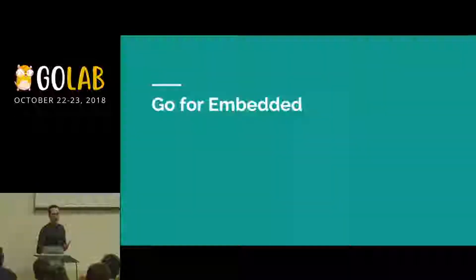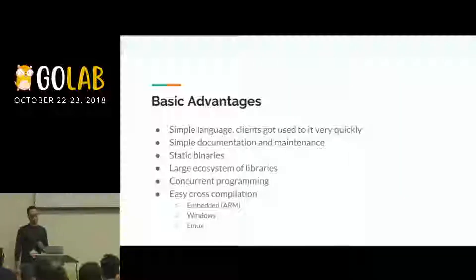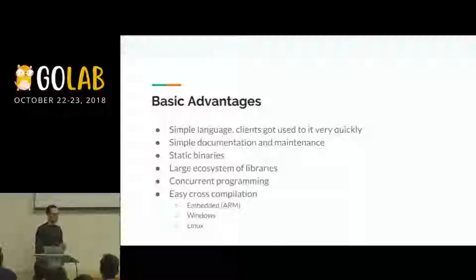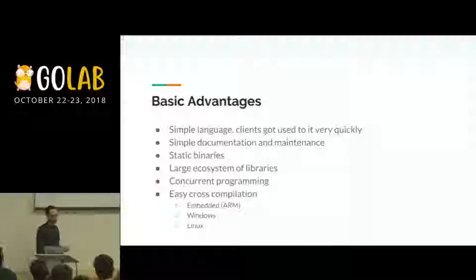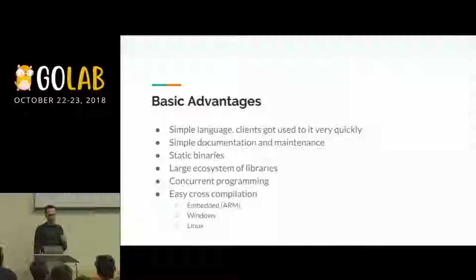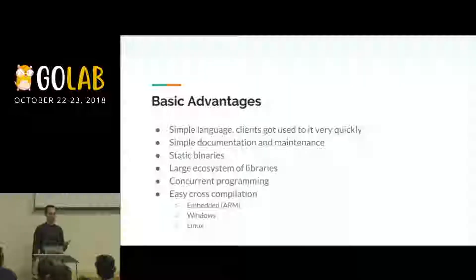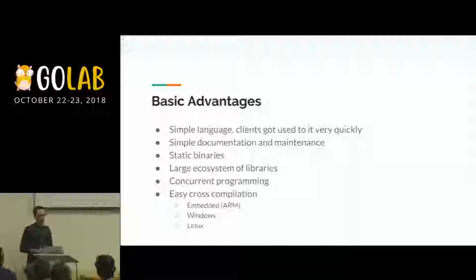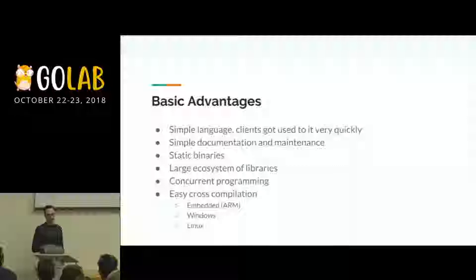Let's see how Go is useful for embedded applications. The language is simple and other people can easily understand the code; documentation and maintenance are good. We have static binaries so deployment is very simple — just copy a binary to the right location. In our case we have a quad-core board so concurrent programming was a good fit. We also had to manage multiple boards, and cross-compiling is very easy — important for us since we maintain ARM boards, Linux, and Windows.